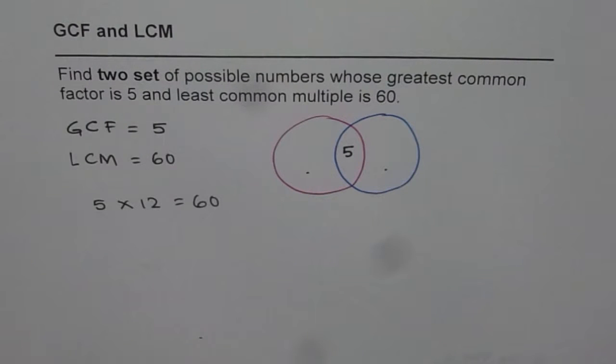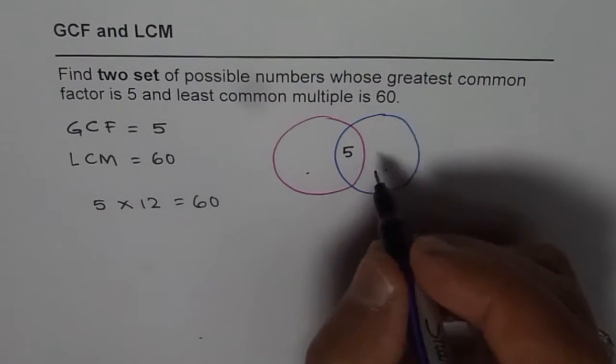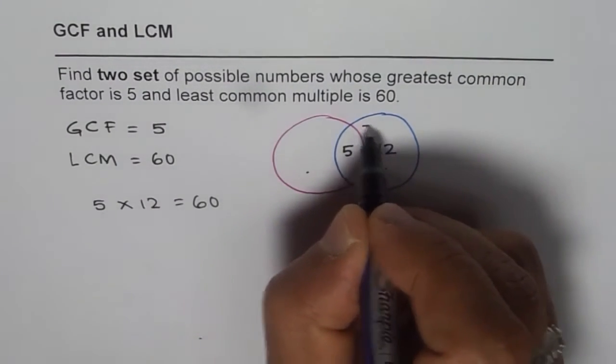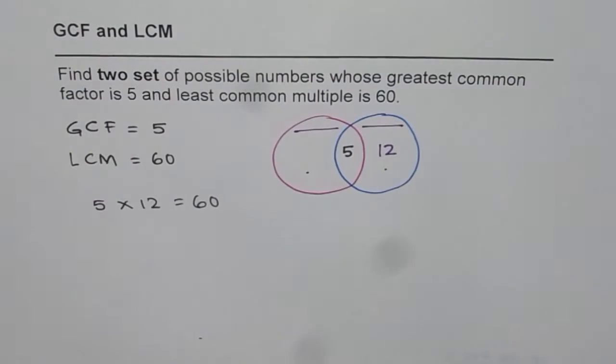So that means 12 could be a factor of the other number. So we could write 12 here. So that gives us one set of numbers.